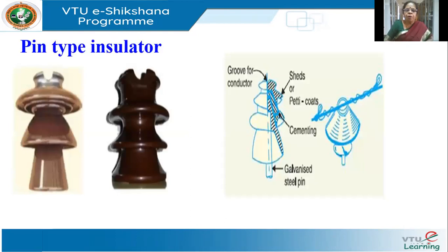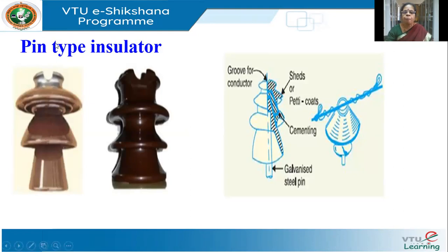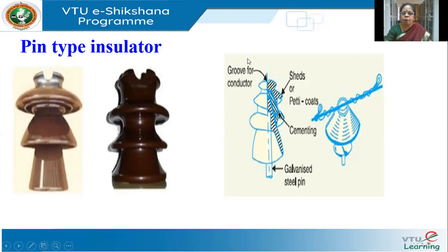The pin type insulator is as follows. I'm sure all of you would have seen this kind of insulator on the roads on your overhead lines. There is a groove on the top — this groove is where the conductor will be placed. These are called petticoats. And at the end, you will have a galvanized steel pin. This is the actual image, and this figure shows you how the pin insulator is fabricated.